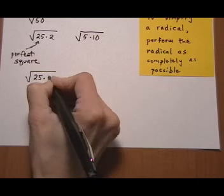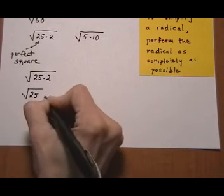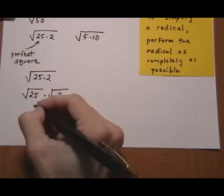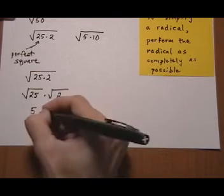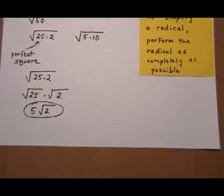So √(25 × 2) is the same as √25 times √2. We do √25, which is 5, and multiply it by √2. There's nothing we can do to the √2, so the answer is 5√2.